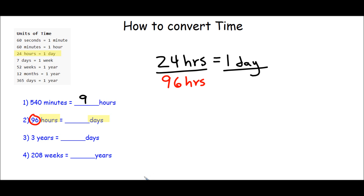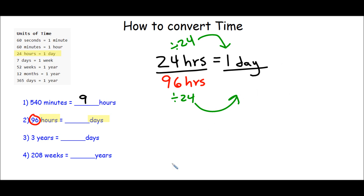Now I ask myself, what happened to the 24 to turn into a 1? I know it went down, so that means I divide it. Any number divided by itself gives me 1, and what I did to the top I must do to the bottom. So this divided by 24 will give me my answer. Let's go ahead and do that on the right-hand side: 96 divided by 24. I can't do this in my head, so I'm going to estimate.